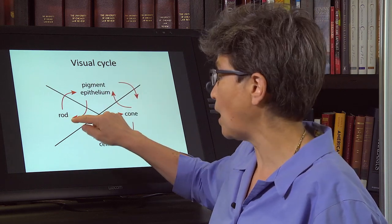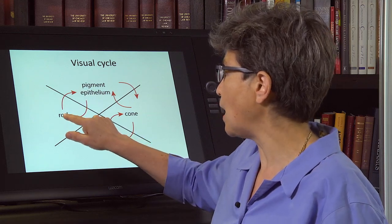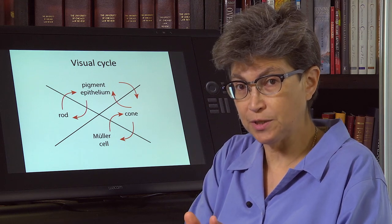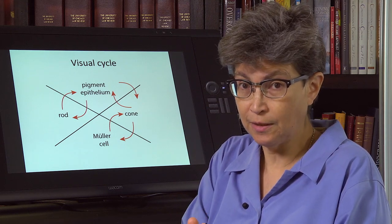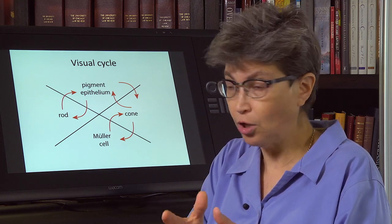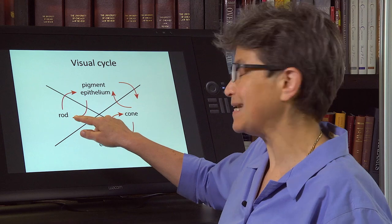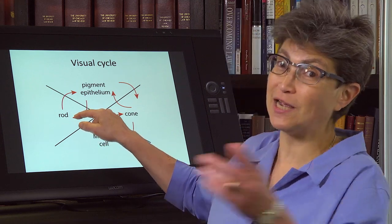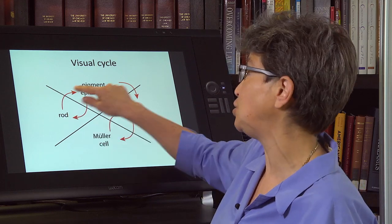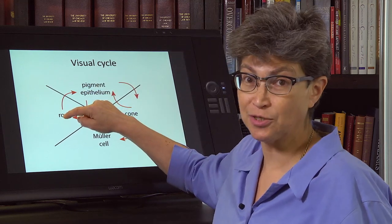So let's talk about rods where the process is better understood. Rods, they absorb light. That molecule that absorbs the light is called rhodopsin. It uses a chromophore, retinol. And the retinol is isomerized by absorption of light. It can't be re-isomerized to the starting position in the rod. It has to be shipped out to the pigment epithelium.